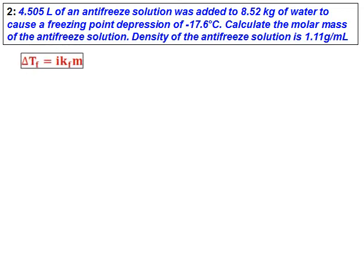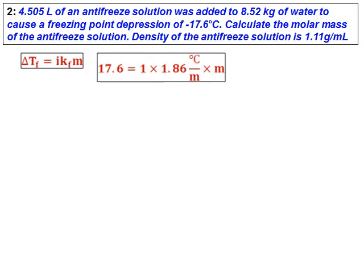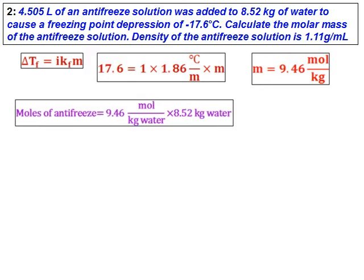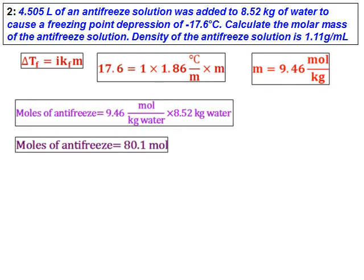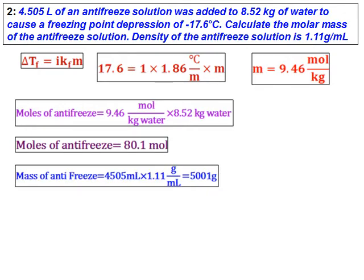Use the formula ΔTf = i·Kf·m to calculate the molality, and I get molality equals 9.46. Once the molality is obtained, using the mass of water given, I can get the moles. And once the moles are obtained, I can get the mass of the antifreeze as well, because the volume of the antifreeze is given and the density is given. So I get the mass of antifreeze as 5001 grams.